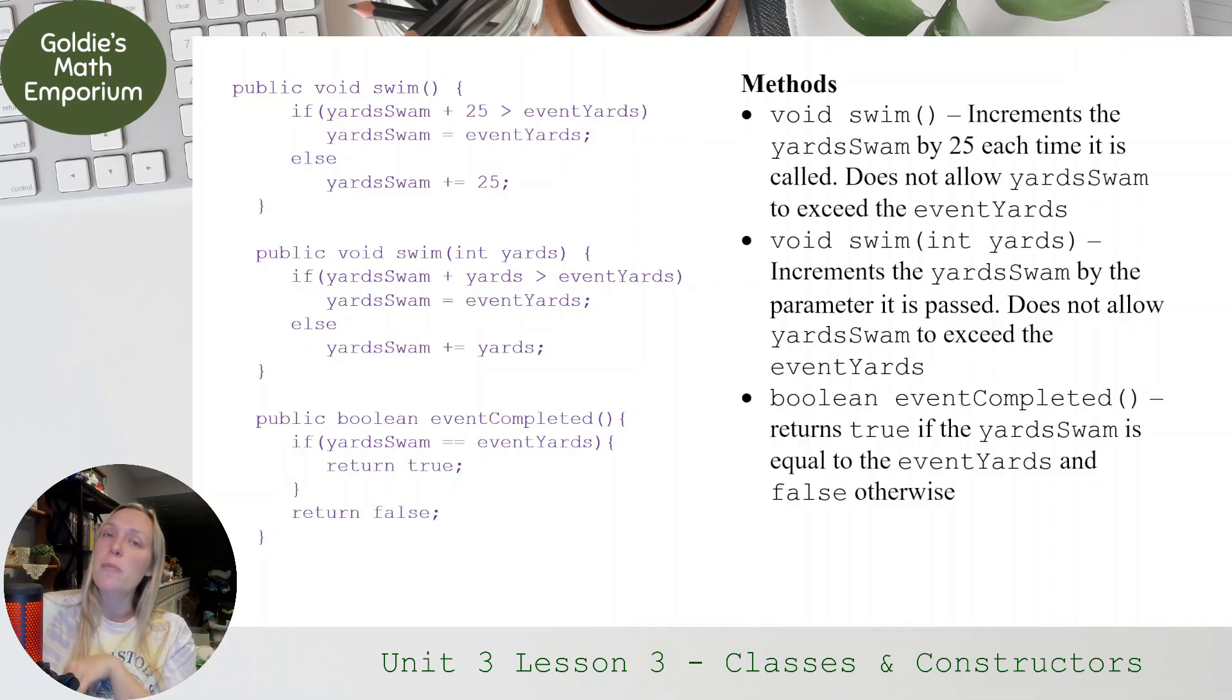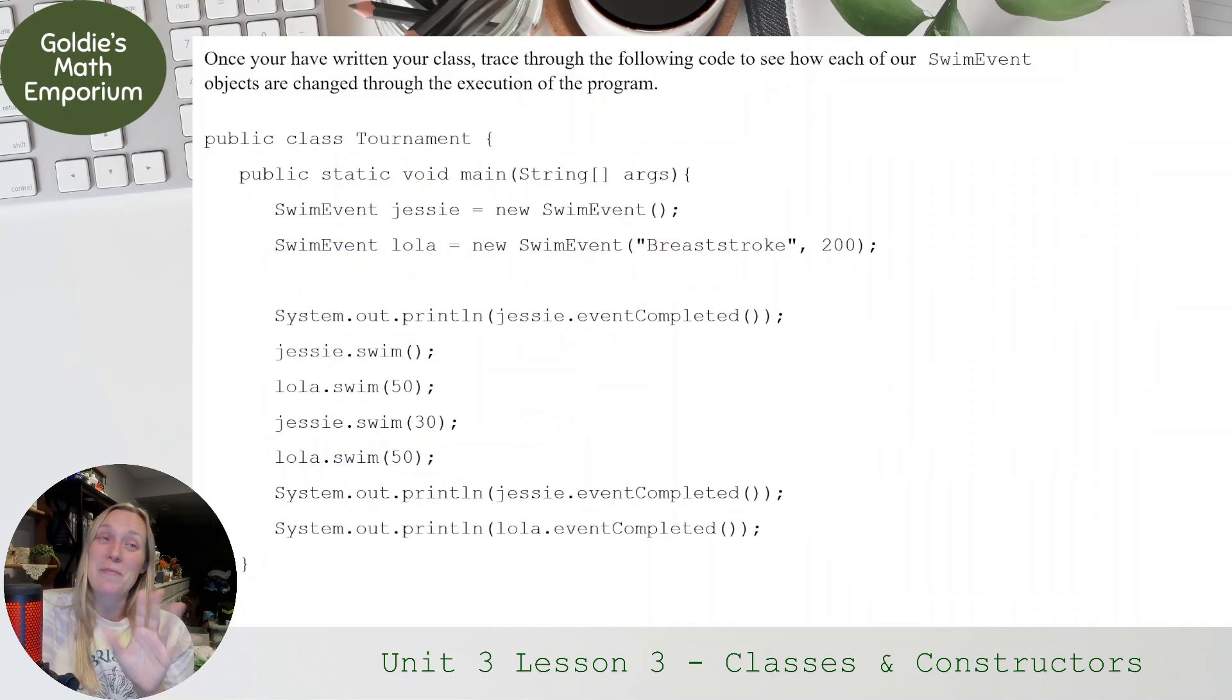Now that we have made our entire class, which is all the AP exam is going to have us do, I want to do a little bit of practice on using this. And looking at the constructors, looking at the methods and just tracing through a program that uses some of this stuff. Now, the AP exam isn't necessarily going to ask you to do this in the free response question. This is just more Goldie's way of adding in a little extra practice, but I think it's going to be good for us here. So we're going to trace through the following code to see how each of our SwimEvent objects are changed through the execution of this program.